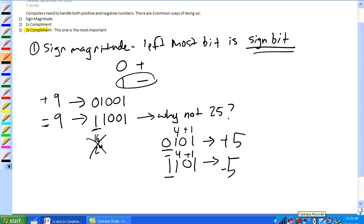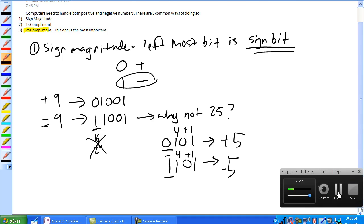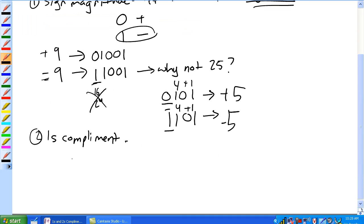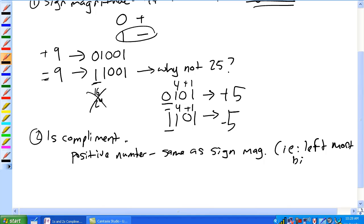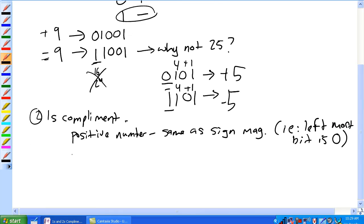Okay, that's sign magnitude. So let's move on to 1's complement. Okay, 1's complement. How do you represent a positive number in 1's complement? Same as sign magnitude, i.e., leftmost bit is a zero.